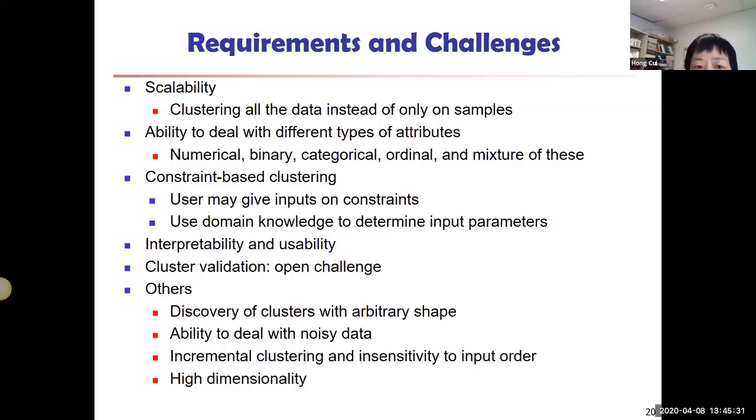We want algorithms to have the ability to deal with different types of attributes. We know all those already, different types. Today we're going to see that k-means can only deal with numerical data, but PAM use medoids, and that can use mixed data types.